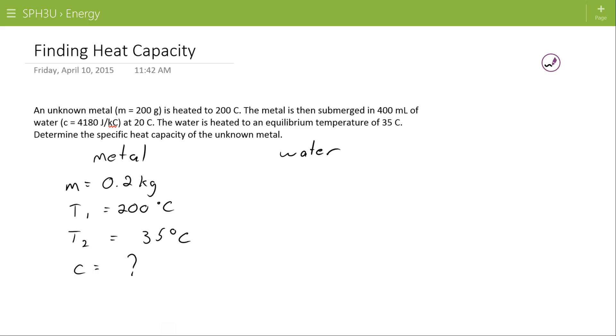Alternatively, the water has a volume of 400 milliliters, but remember 1 milliliter equals 1 gram. So we can say that 400 milliliters is the same as 400 grams, and then we can convert that to kilograms: 0.4 kilograms. And the specific heat capacity of water is 4,180 joules per kilogram degree C.